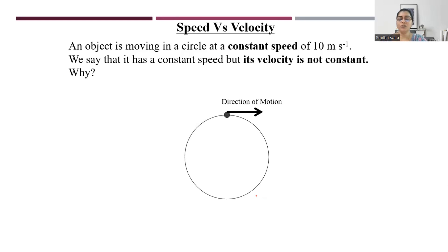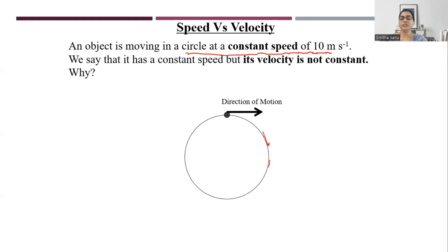Look at this motion and decide whether it is moving at constant speed or varied speed. When an object moves in a circular path, it moves at a constant speed of 10 m/s, but velocity is not constant. The reason is velocity is always tangential at a given point. Since direction of velocity is constantly changing, and velocity is a vector quantity, if direction changes, velocity changes. Hence circular motion is an accelerated motion.